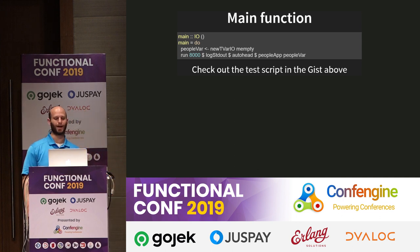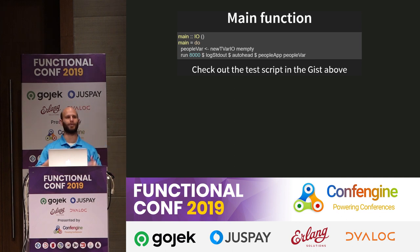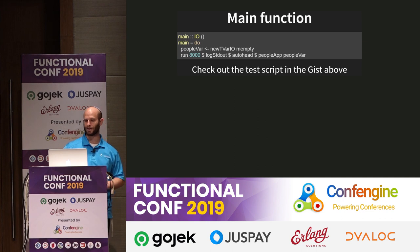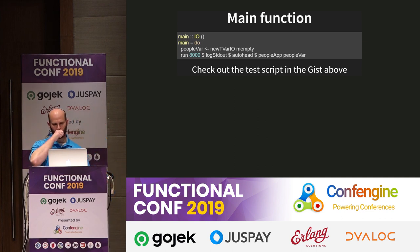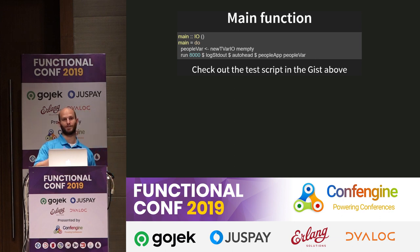Finally, at the end of all that, we have our main function. We create a new, empty mapping, stick it into a TVar, and serve the application. peopleApp peopleVar is an application. We then wrap it with the autoHead middleware, which automatically generates responses to HEAD requests by using GET. We can layer as many middlewares as we want, so let's add logging also. Then we run this thing on port 8000. If you go to the GitHub link from the slides, you can also look at a test script that demonstrates this thing actually working.